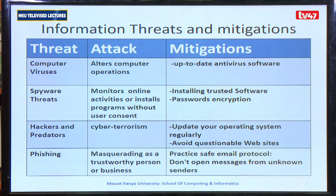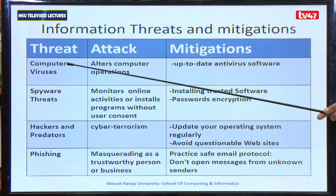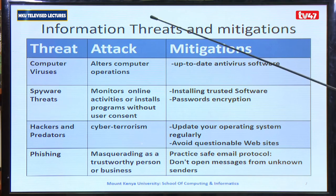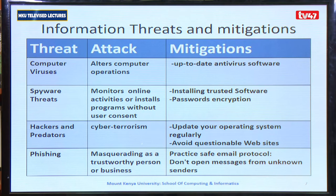We need to understand some of the threats to a computer or information system. I'm going to go through four of them. One of them is a computer virus, which alters computer operations. A virus is a malicious program or code intended to alter any operations of a computer. One of the mitigation measures is to use updated antivirus software which we have in the market.